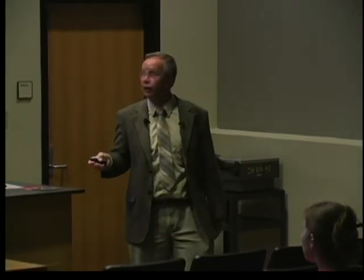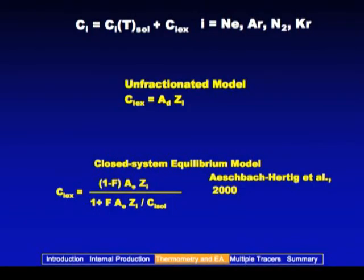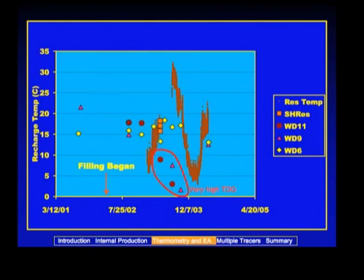If we're going to do noble gas thermometry here, we're going to have to account for that extra gas very well, or our thermometry just won't work. We've employed a couple of different models. The one we're most happy with is one developed by Werner Aeschbach-Hertig, a model that has a couple of different fitting parameters. We went to this site, collected samples for noble gases, made measurements of the whole suite of gases, and through an inversion process, we have solved for the recharge temperature with this model of excess air. That's what these data points are—our estimates of the recharge temperature.